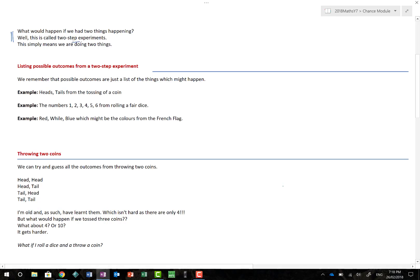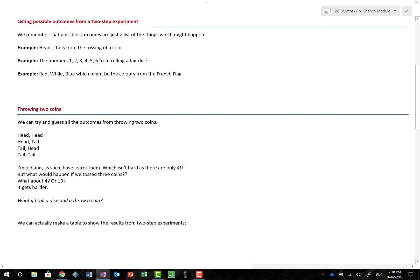Because we're doing two different things, right? We're taking two cards, we're choosing two dice or rolling two things. So if we recap slightly from this one-step stuff, when we have one step we have a head and a tail from the toss of the coin, we have the numbers one to six from rolling a fair die, and we have the colors red, white and blue from the French flag.